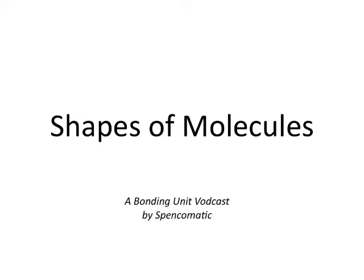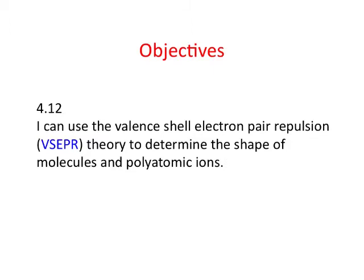In this vodcast we're going to look at the shapes of simple molecules. Your objective for this vodcast is that you have to be able to use what's called the valence shell electron pair repulsion theory, or VSEPR for short, to determine the shape of simple molecules and polyatomic ions.